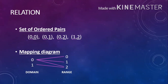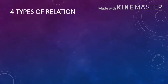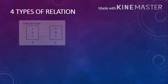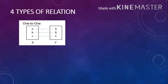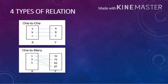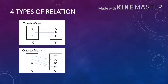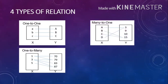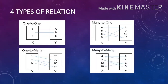The next topic is the types of relation. We have one-to-one, where each value in the domain is related to only one value in the range. Next is one-to-many, wherein each value in the domain is related to multiple values in the range. We also have many-to-one, wherein multiple values in the domain are related to one value in the range. And lastly, many-to-many, wherein multiple values in the domain are related to multiple values in the range.